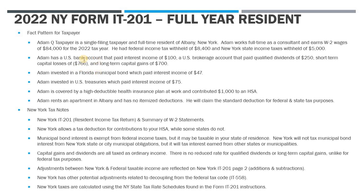As far as investment income, Adam has a US bank savings account paying interest income of $100, and a stock brokerage account that paid qualified dividend income of $250 during the year. He also had short-term capital losses of $766 and long-term capital gains of $700. He's invested in Florida municipal bonds, which paid interest income of $47, and US Treasury investments which paid interest income of $75 during the year.